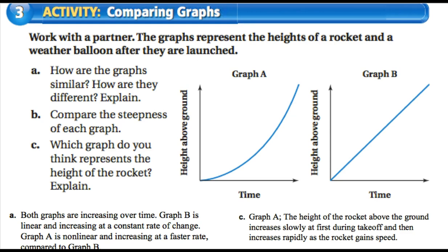These graphs represent the heights of a rocket and a weather balloon after they are launched. How are the graphs similar? They both increase. How are they different? One is linear and one is not linear — they're both increasing but at different rates.